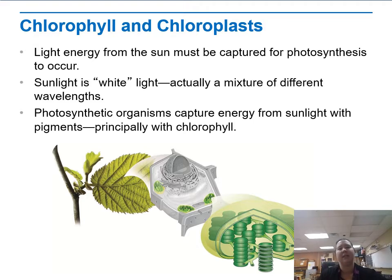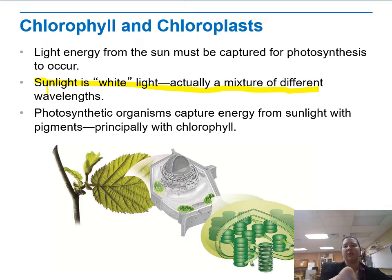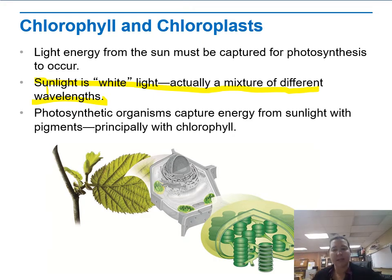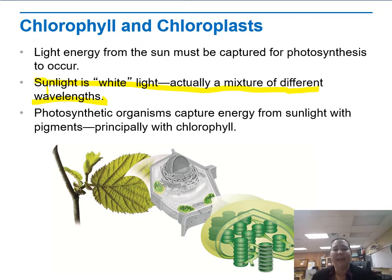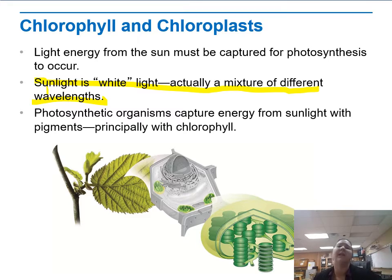Color actually exists on a continuum. Sunlight is white light that's made up of a bunch of different colors — the rainbow. Anytime we see a rainbow, what happened is we've broken that light apart. What plants and other photosynthetic organisms do is they capture the energy from sunlight with these pigments and then use it to propel reactions.